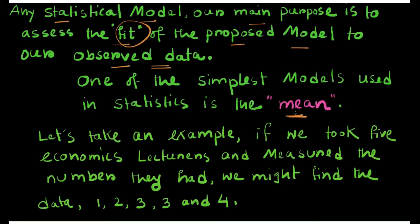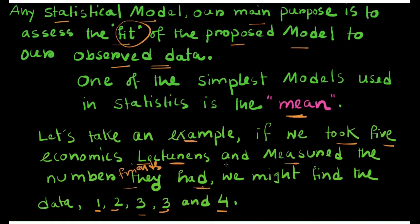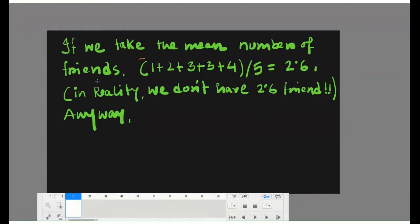One of the simplest models used in statistics is the mean. For example, if we took five economics lecturers and measured the number of friends they had, we might find the data is 1, 2, 3, 4, 3, and 4. If we take the mean number of friends, that is 1+2+3+3+4 divided by 5, we get 2.6. Of course in reality you don't have 2.6 friends, but this is a hypothetical number for demonstration purposes.